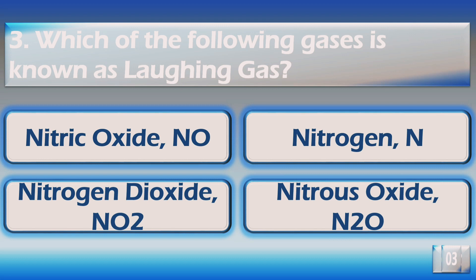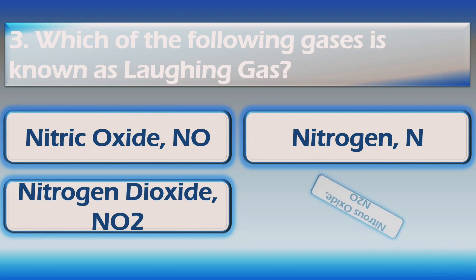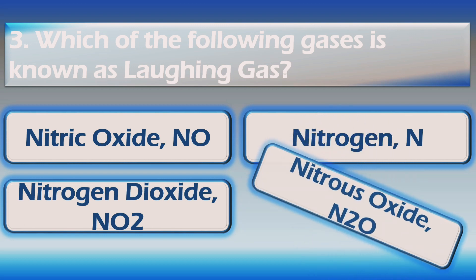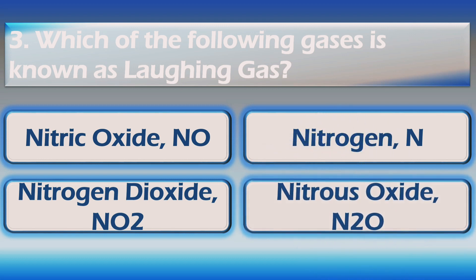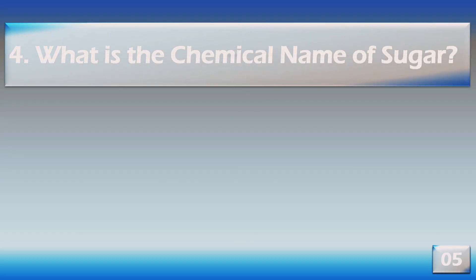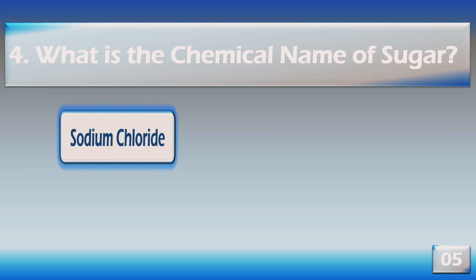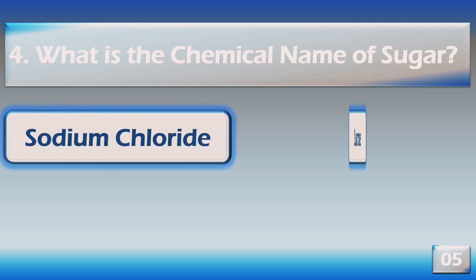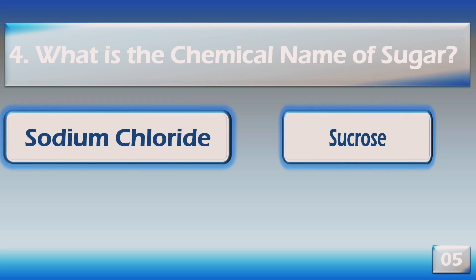Which of the following gas is known as laughing gas? The right answer is nitrous oxide, N2O. What is the chemical name of sugar?